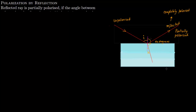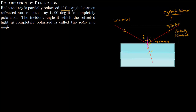To recap: unpolarized light falls on the surface and gets reflected. When it gets reflected, it is partially polarized. But if the angle between the reflected ray and the refracted ray is 90 degrees, then the reflected ray is completely polarized.